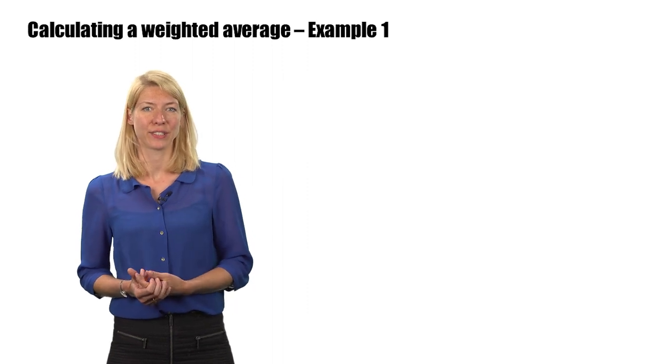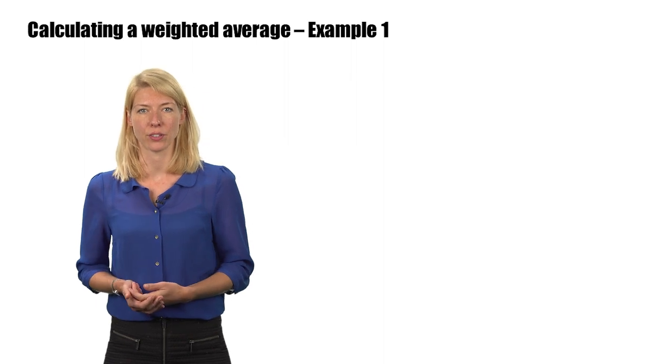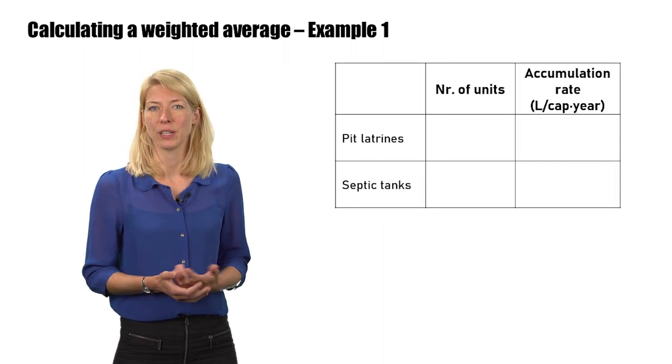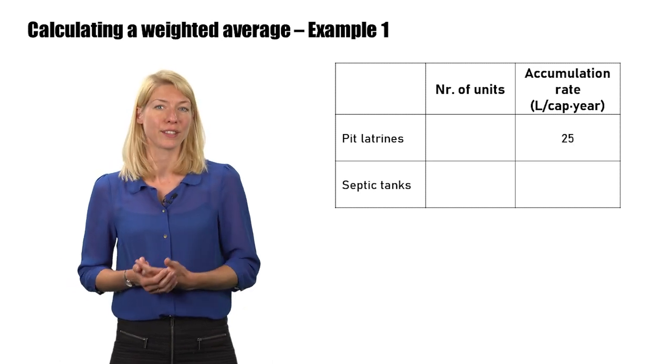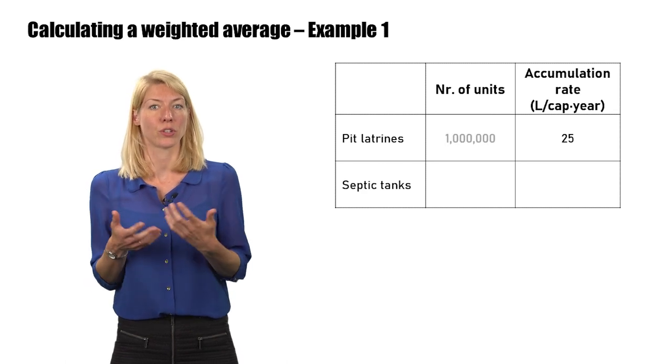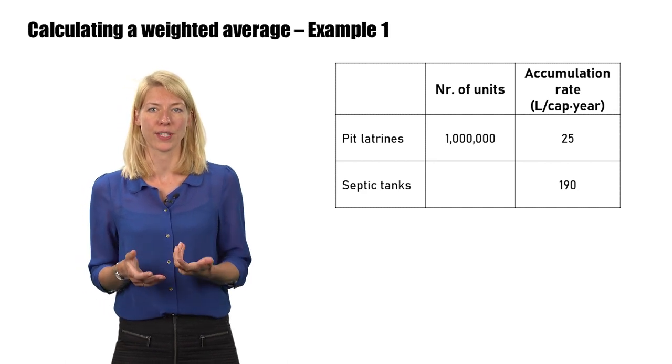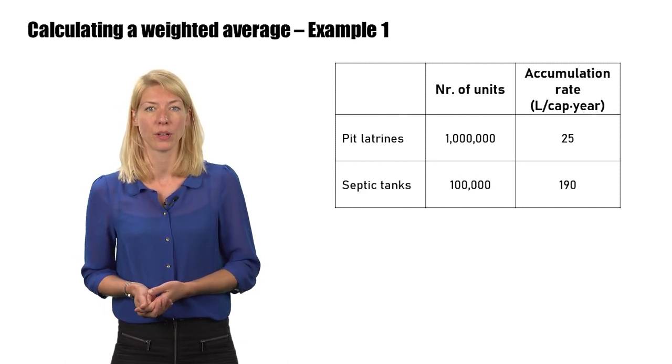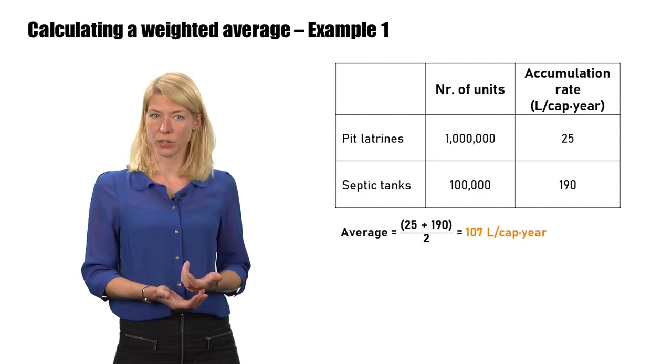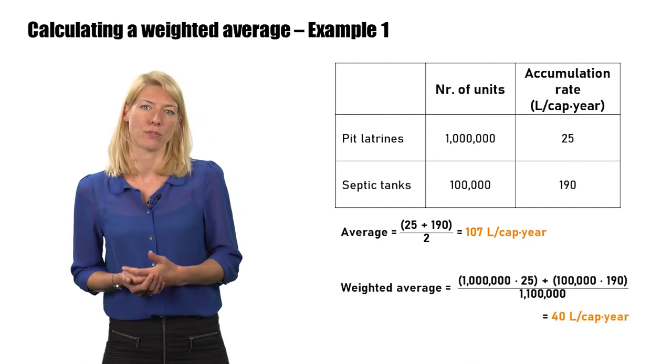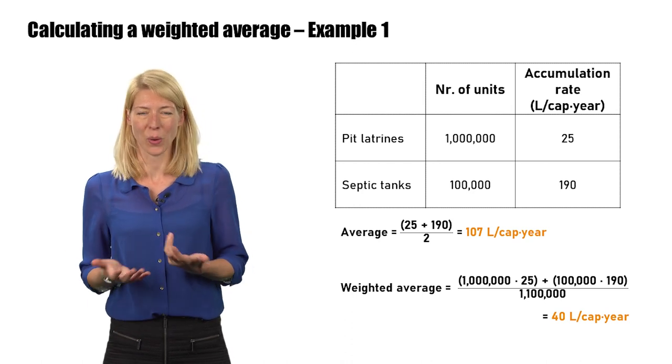Once the most statistically different categories are identified, we then use these values to make a weighted average. For example, if the accumulation rates for a city served by septic tanks and pit latrines were 25 liters per capita in a year for pit latrines, which are used by a million people, and 190 liters per capita in a year for septic tanks, which are used by 100,000 people, just taking a simple average of the two accumulation rates would yield 107, whereas taking the weighted average for the entire city would yield 40 liters per capita in a year. Quite different values.